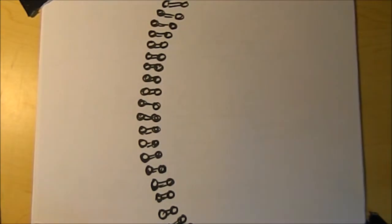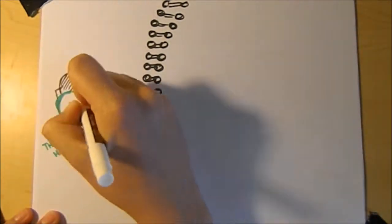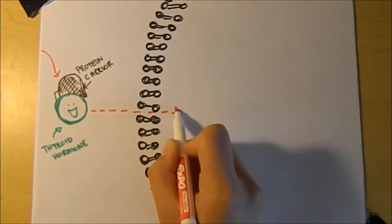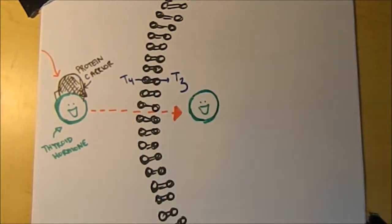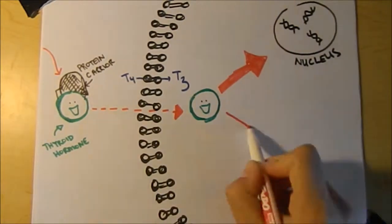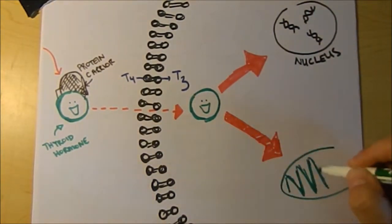Once at the cell, thyroid hormones can easily cross the cell membrane. During this process, T4 converts to T3. Once inside the cell, the thyroid hormones can either go to the nucleus or to the mitochondria.